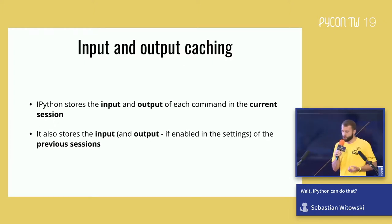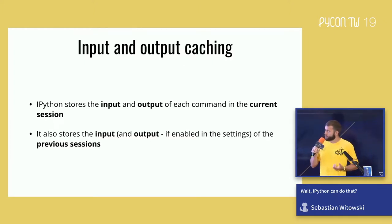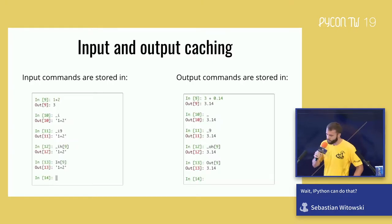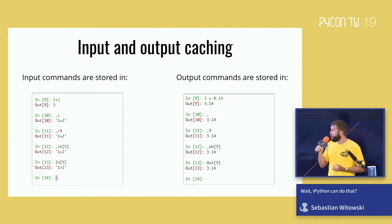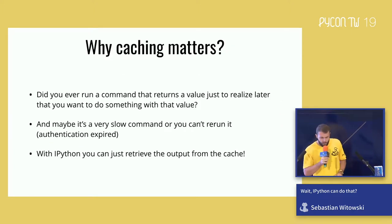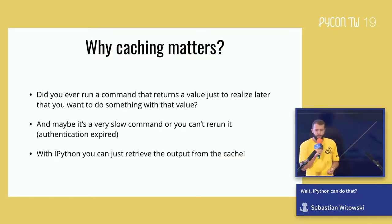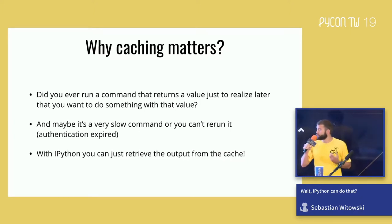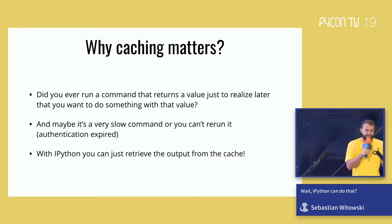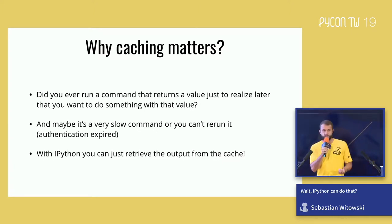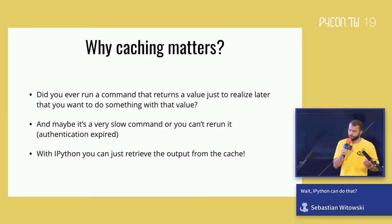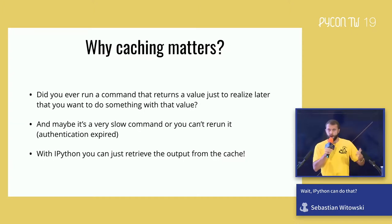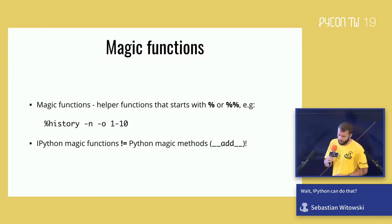IPython stores the input and output of each command you run in the current session. It also stores the input of previous sessions, and if you enable it in the settings, it will store the output as well. There are many ways to access those cached variables — each stored in a separate variable, or in a list, or a dictionary. Why do you care? Did you ever run a command that returns some value only to realize later you actually want to do something with it? If it's a fast command, no problem — but if it's a slow command or your authentication token has expired, you have a problem. Unless you're using IPython, where everything is cached.